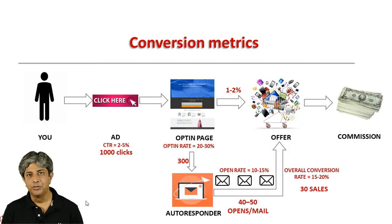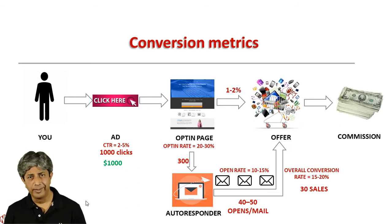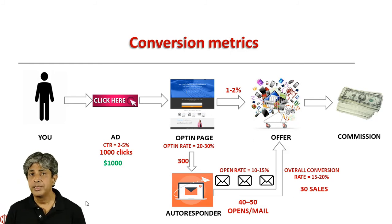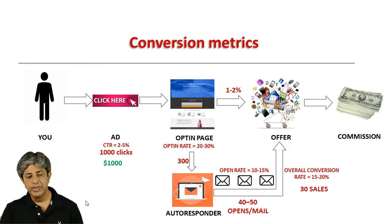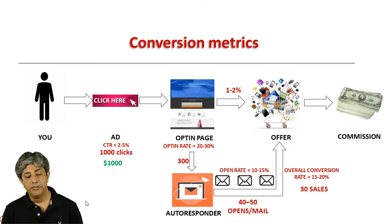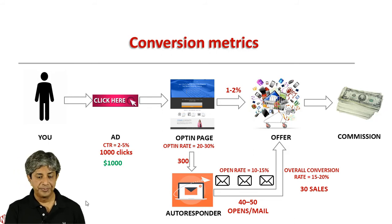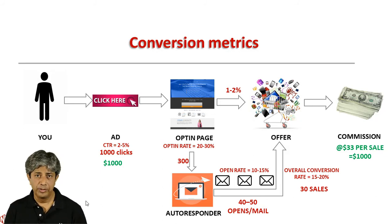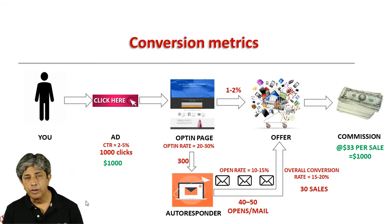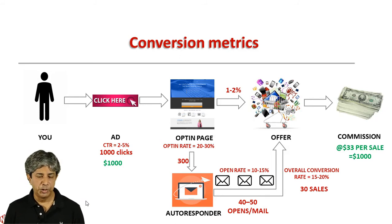Now let's look at the dollars and cents. A rough rule of thumb is about one dollar per click — though it can be more depending on the category and competition. So to send a thousand clicks it costs you roughly a thousand dollars. Having gone through the entire funnel with all the dropoffs, if you end up with 30 sales, you need to make at least $33 per sale in commission just to recover your traffic costs. Adding tool costs and other expenses, you probably need to make about $35 to $40 per sale to break even.